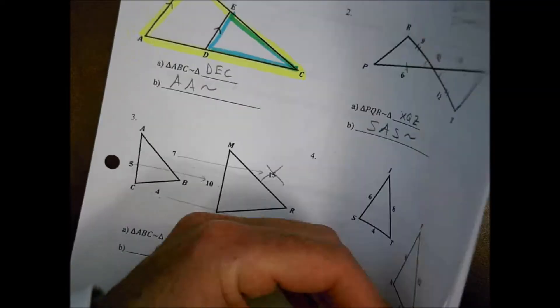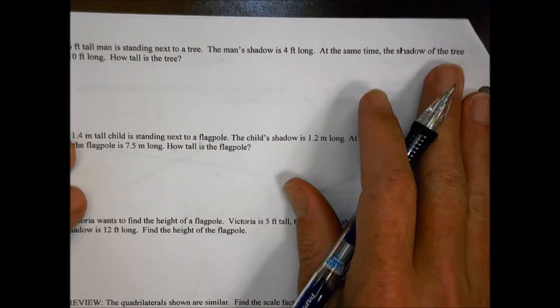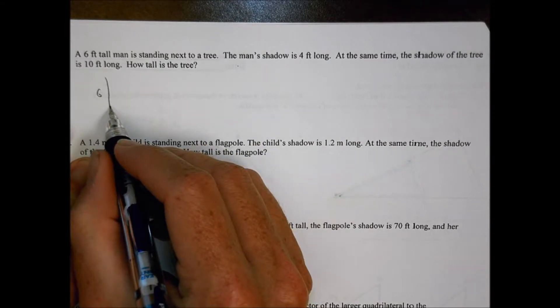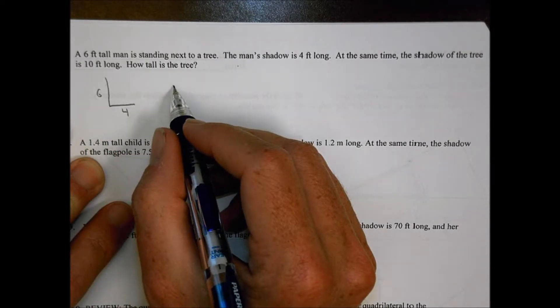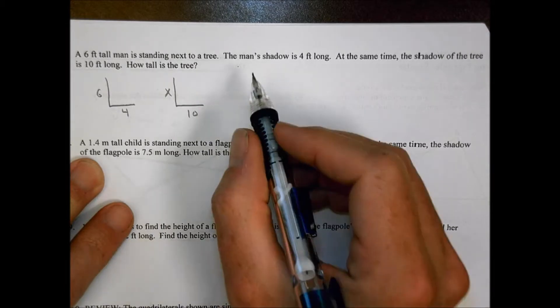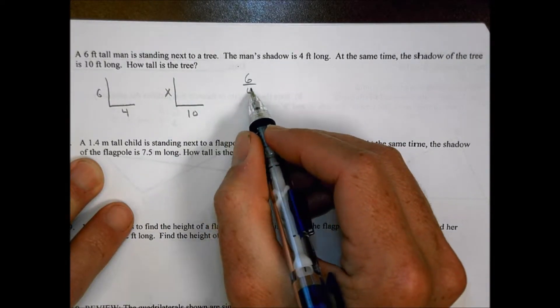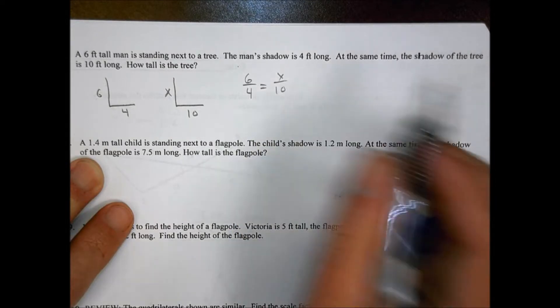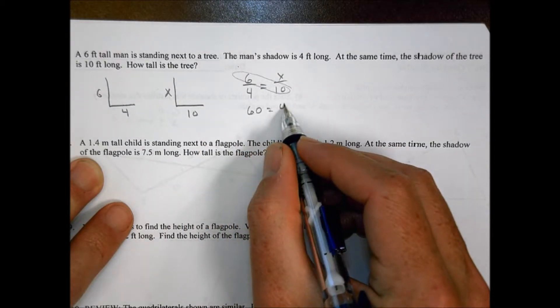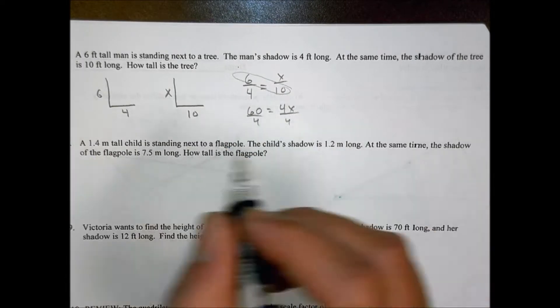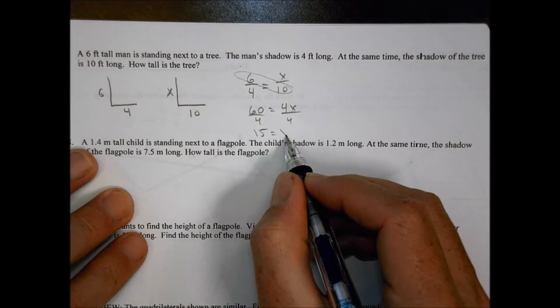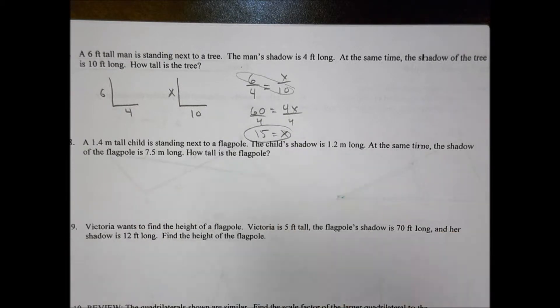Let's take a look at the back page. Number seven. It says a six-foot-tall man is standing next to a tree, and there's a shadow that's four feet long. At the same time, you have a tree, and the tree has a shadow that's ten feet long. How tall is the tree? We set this up as a proportion. We can say six is to four as x is to ten. You do 60 equals 4x, divide both sides by four. 60 divided by four equals 15. And so the height of the tree is 15 feet.